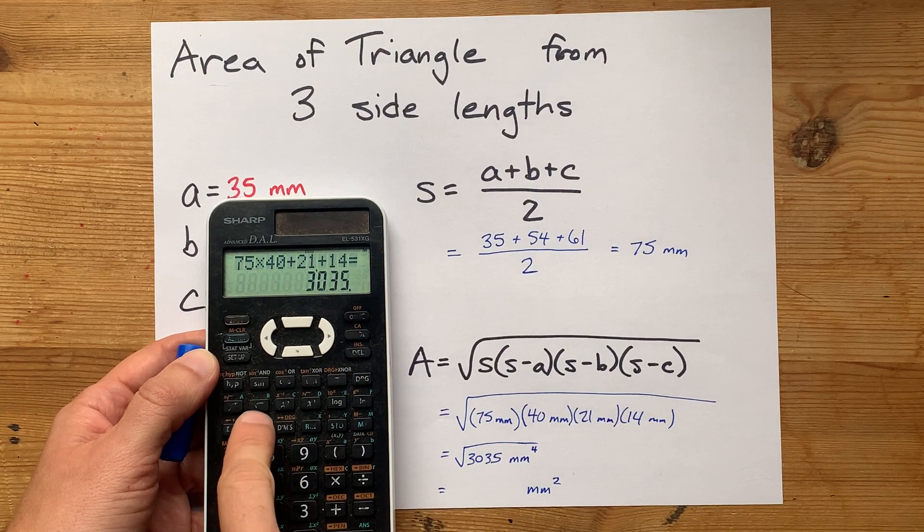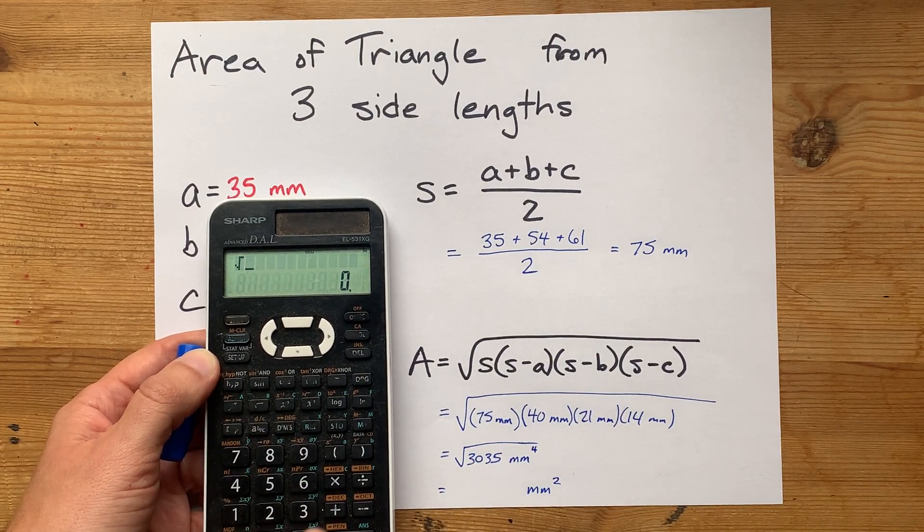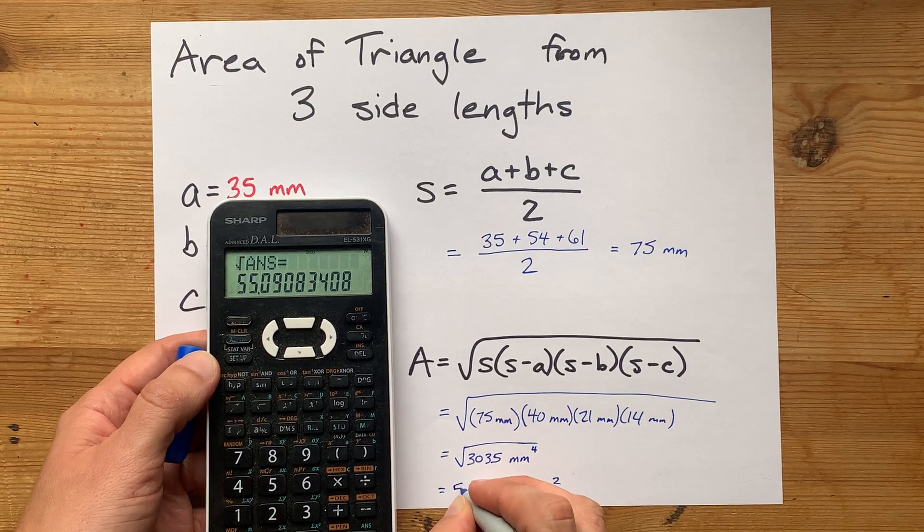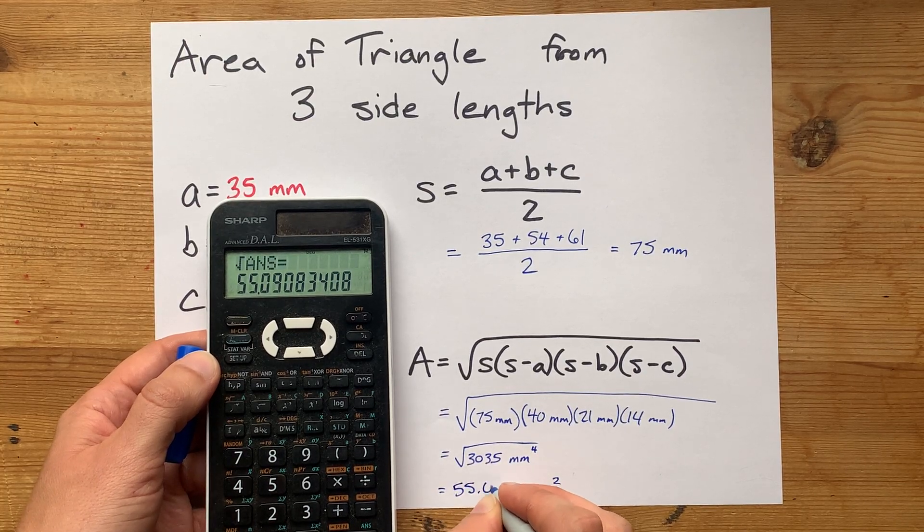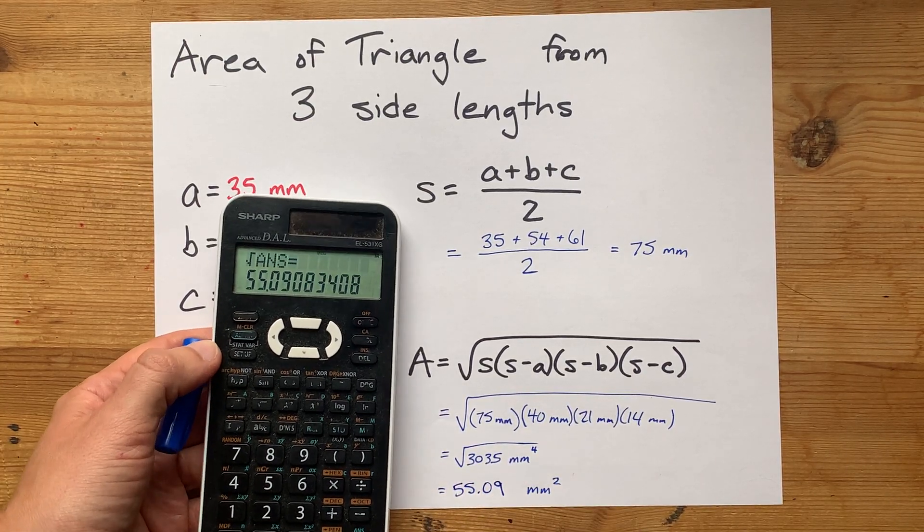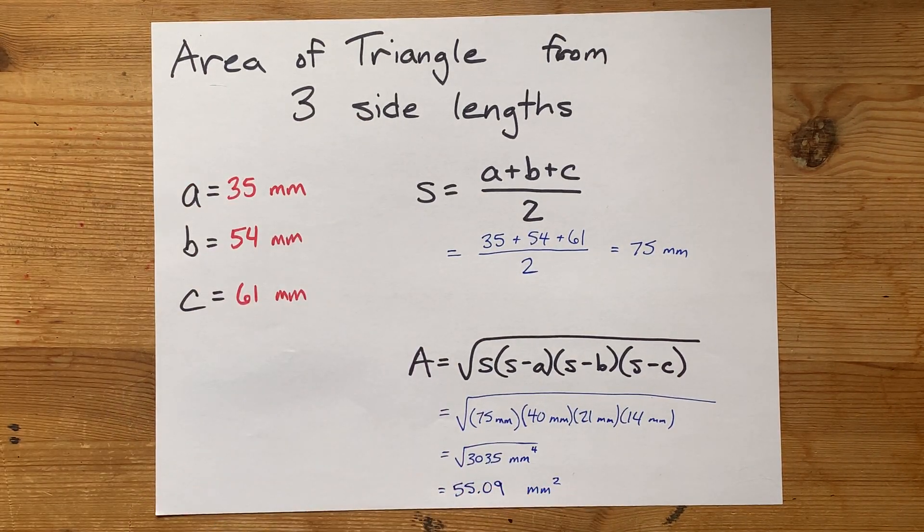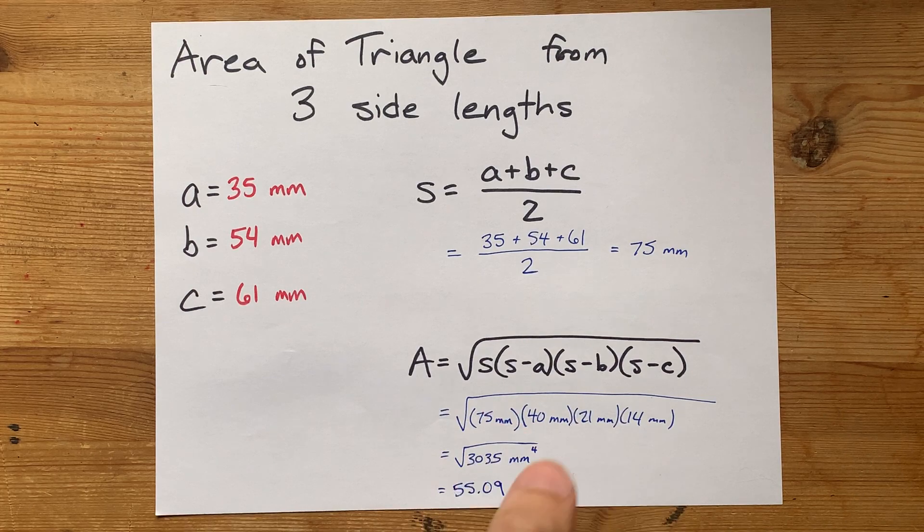I also have to square root 3035 here. I'm going to take the square root of that answer. I get 55.09. Cool. There you go. The area of this triangle is 55 millimeters squared-ish.